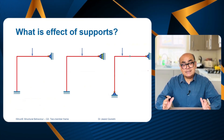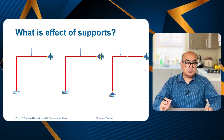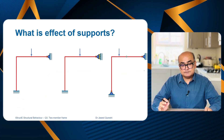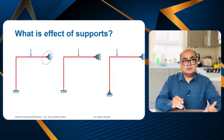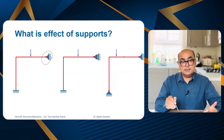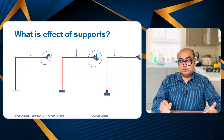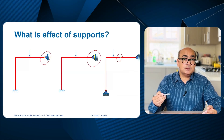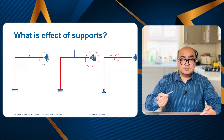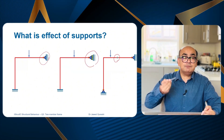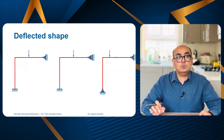Now I will go on to solve three different cases and study the effect of support conditions on both deflected shapes and bending moment diagrams. In the first case we have a pin support, in the second a roller, and in the third an internal pin. We need to understand what effect an internal pin has on these kinds of problems.